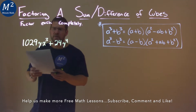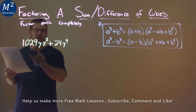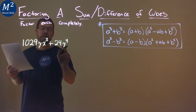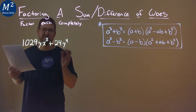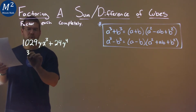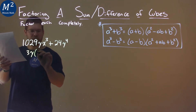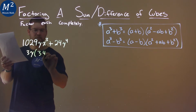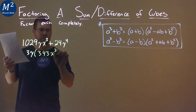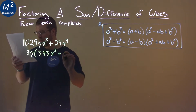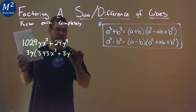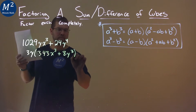The first thing I notice is that 3 goes into both numbers here, and there's also a common y, so let's pull that out. 3y comes out, and we're left with 343x to the third plus 8y to the third power.